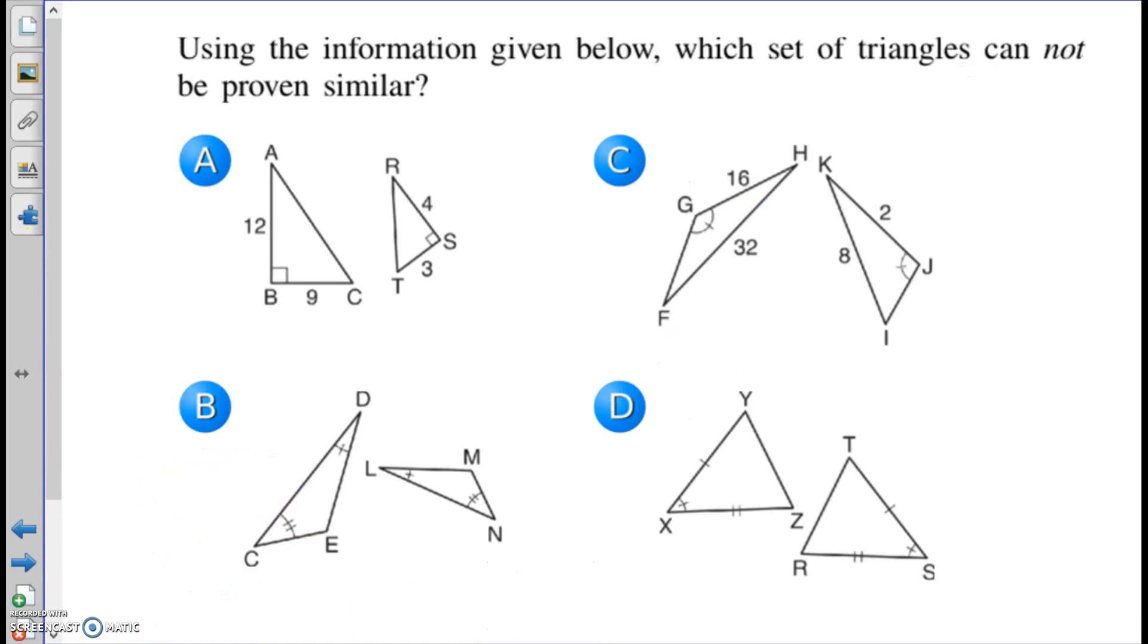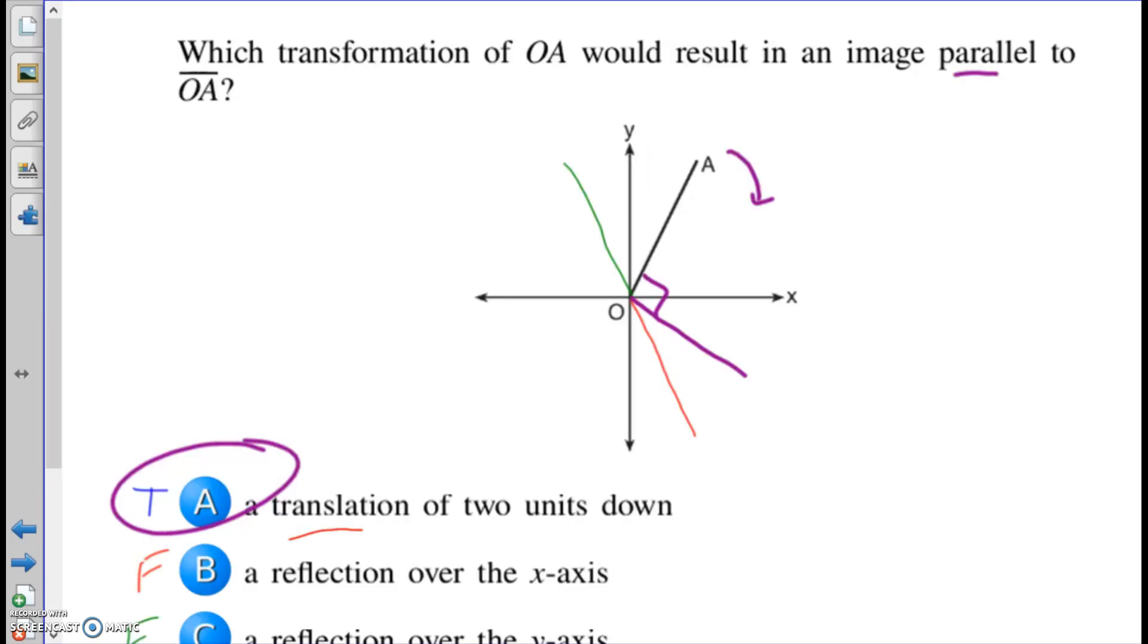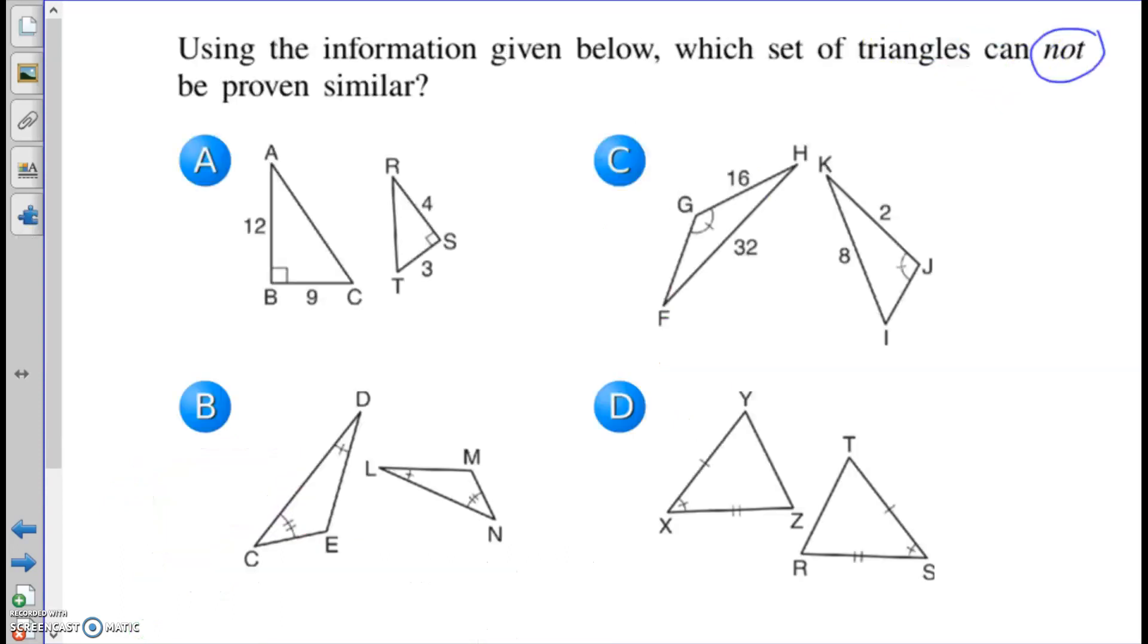Using the information given below, which set of triangles can not - I stress this so much to my classes and so many students still need the reminder, circle key words. Underline or circle, especially things like not or what to round to or isosceles or parallel. Like this class question, I underlined parallel, I'm going to circle it, it's even better. So what is not similar?